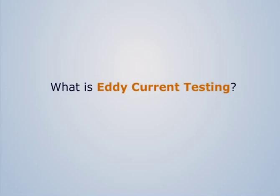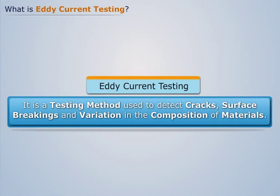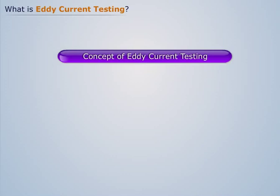What is Eddy current testing? Eddy current testing is a testing method used to detect cracks, surface bearings, and variation in the composition of materials. In order to understand this test method, let's perform this test on the ferrous casting product.